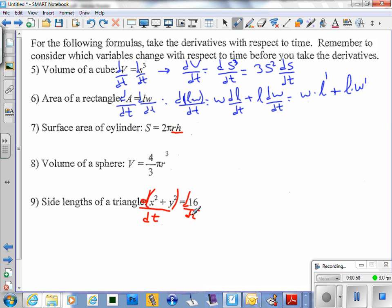Since 16 is a constant number, d(16)/dt is going to be 0.